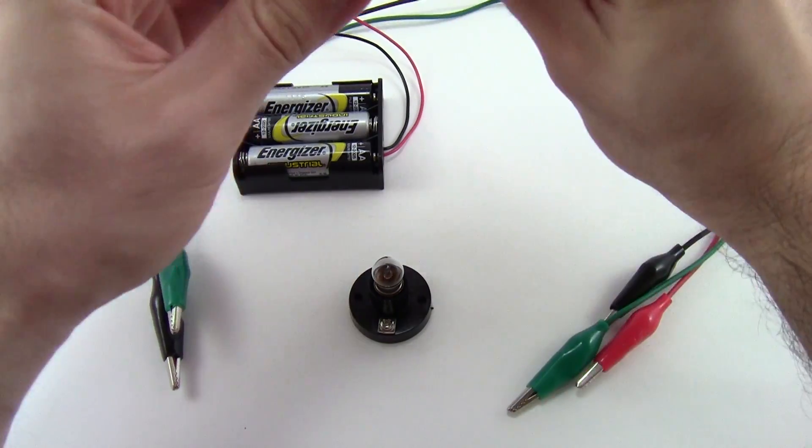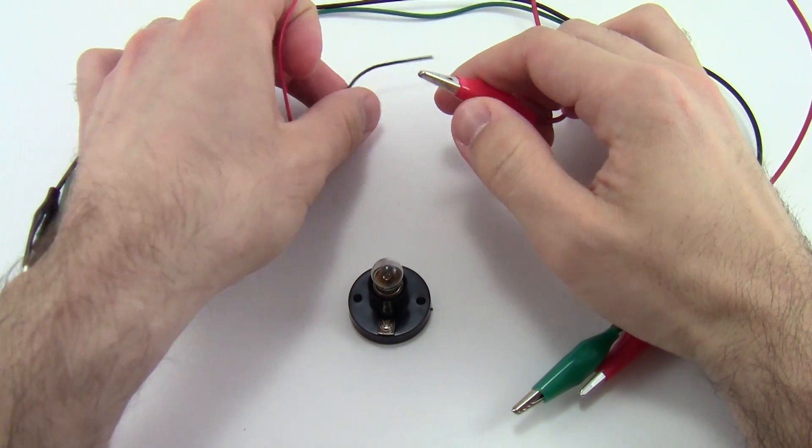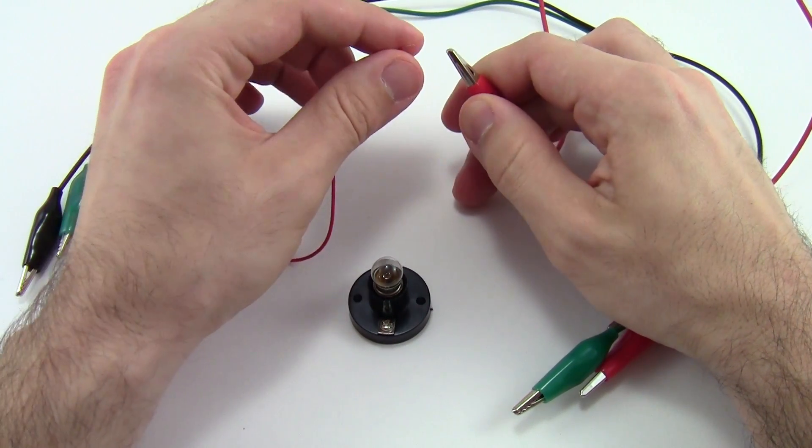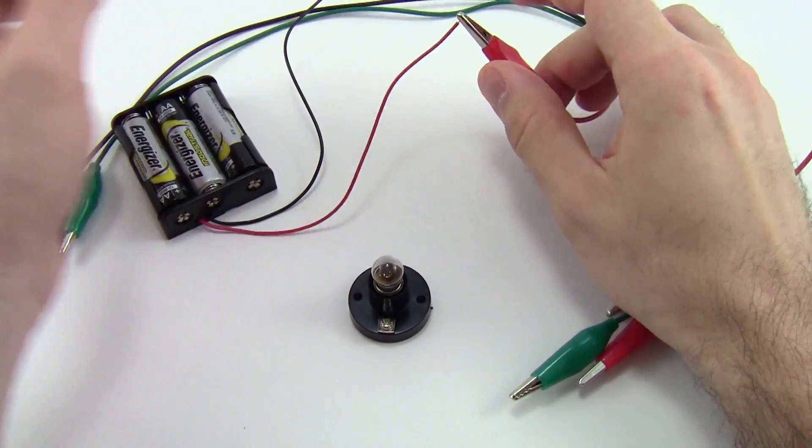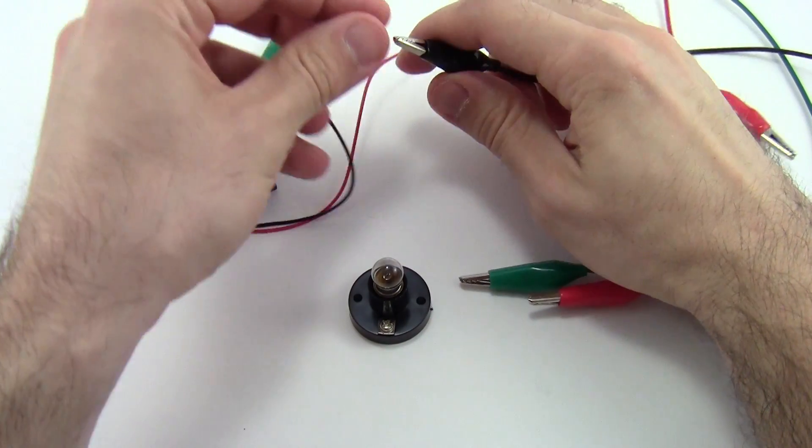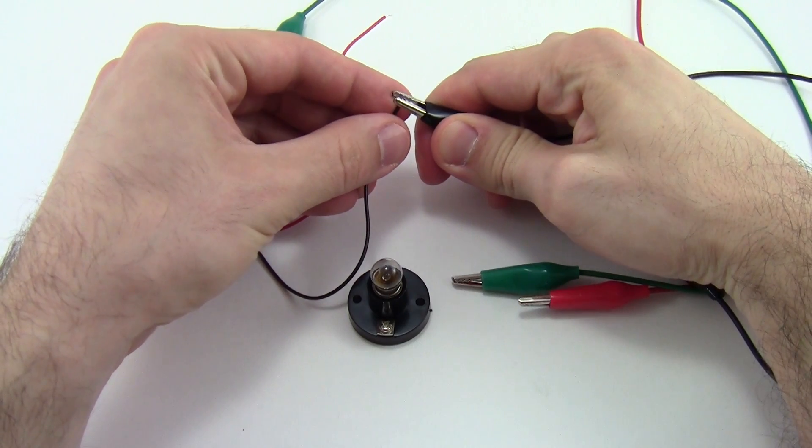We're going to color code here. Take the red alligator clip and connect it to the red wire from the battery pack. Take the black alligator clip and connect it to the black wire.